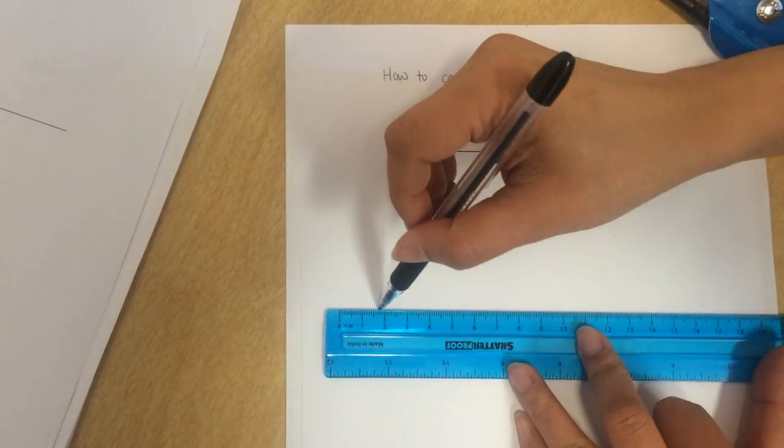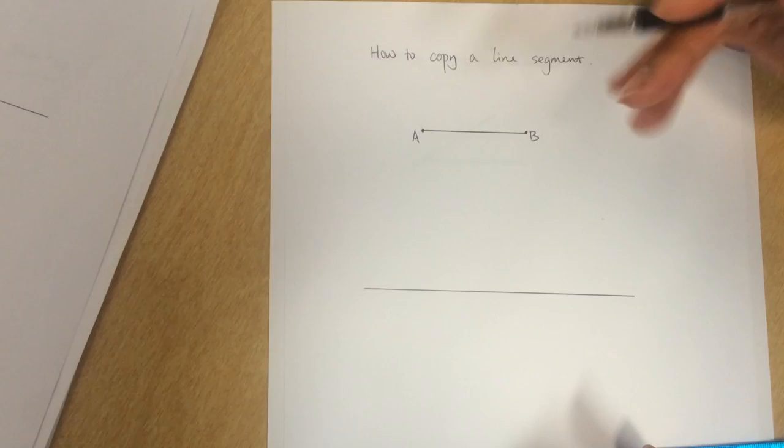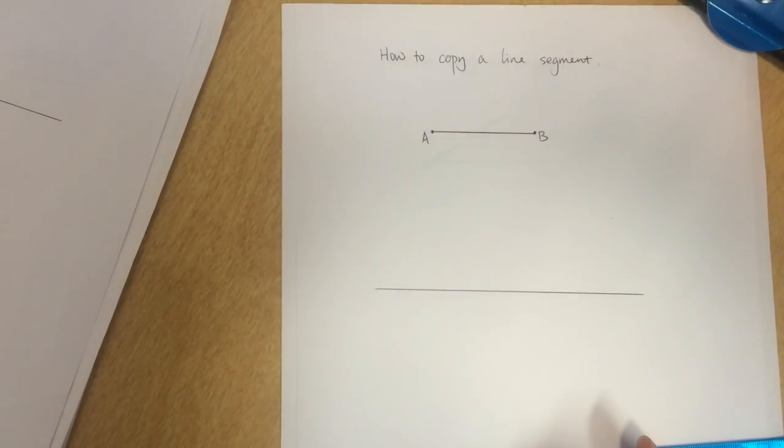So the first step is to make a very long line. That's the line we are going to copy the line segment onto.